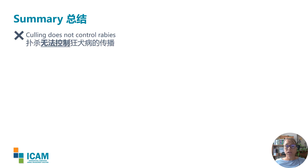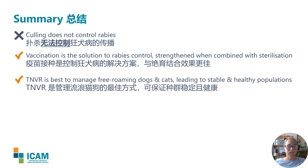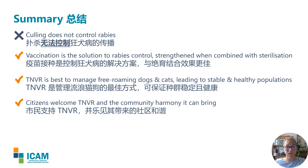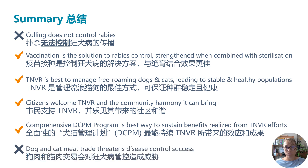In summary: culling does not control rabies and can in fact increase the risk of transmission. Vaccination is a highly effective solution to rabies control and is made more powerful when combined with sterilisation. TNVR is the best method of managing free-roaming dogs and cats, leading to stable and healthy populations. Citizens welcome TNVR and the community harmony it brings. Comprehensive dog and cat population management, combining other interventions with TNVR, is the best way to achieve sustained benefits. And the dog and cat meat trade is a very real threat to disease control success. Thank you for your attention and time.